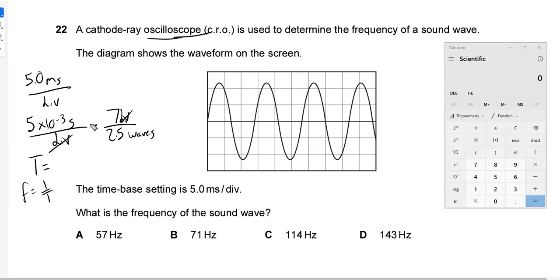So let's go ahead and take 5 by 10 to the negative 3. I've got the calculator queued up over here. So 0.005, 5 by 10 to the negative 3, divided by 2.5, and that gives us the time period. Oh, we got to multiply it by seven, seven divisions. So this gives us the time period, 0.014 seconds per wave. So the frequency is just the inverse of that. So we can get one over x. This gives us 71.42 hertz. And so choice B is the correct answer for this question.